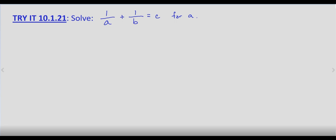So what's our least common denominator? Well, since we have a and b in our denominators, our least common denominator is going to be ab. So we'll multiply both sides by ab.